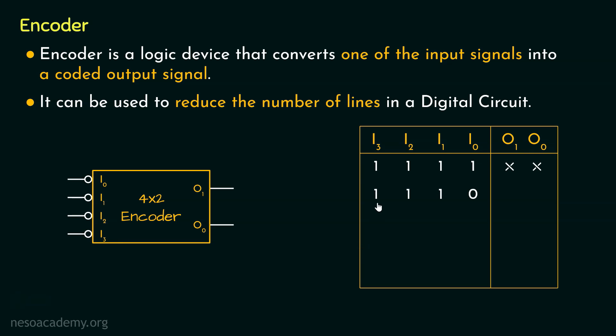Now notice this pattern, 1, 1, 1, 0. So clearly, only the input line I0 is high, the rest are low. Remember, we are using active low inputs. So to specify that I1 input line is high, we are going to use this pattern.